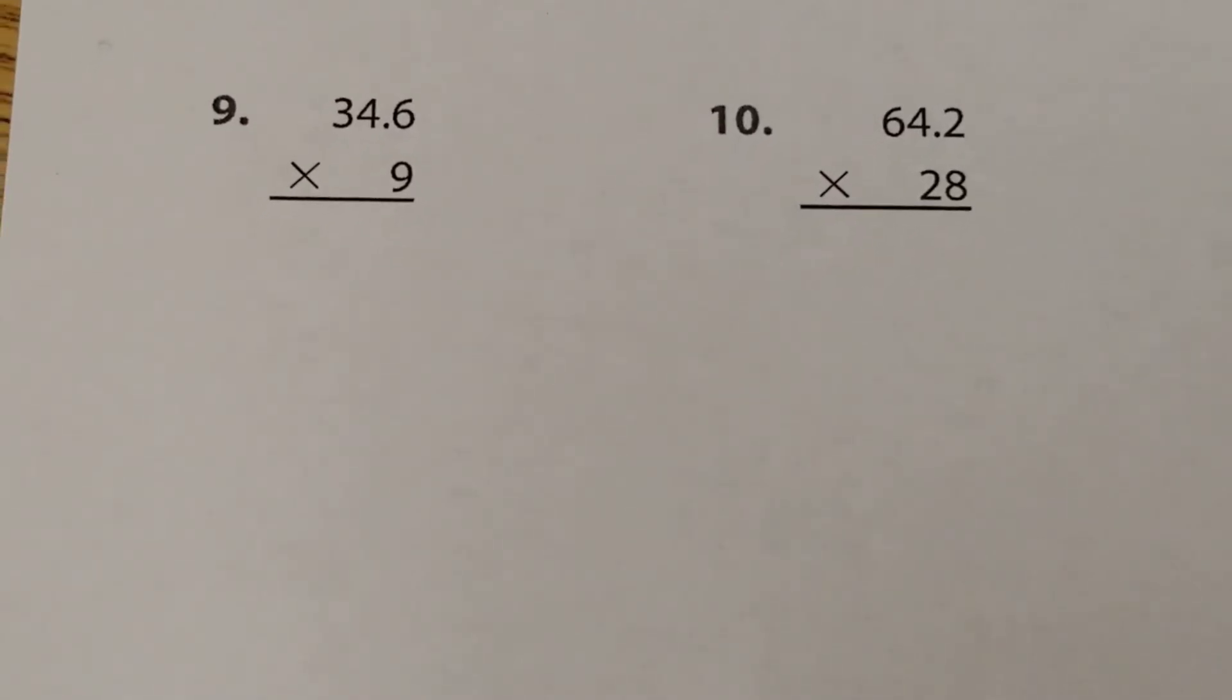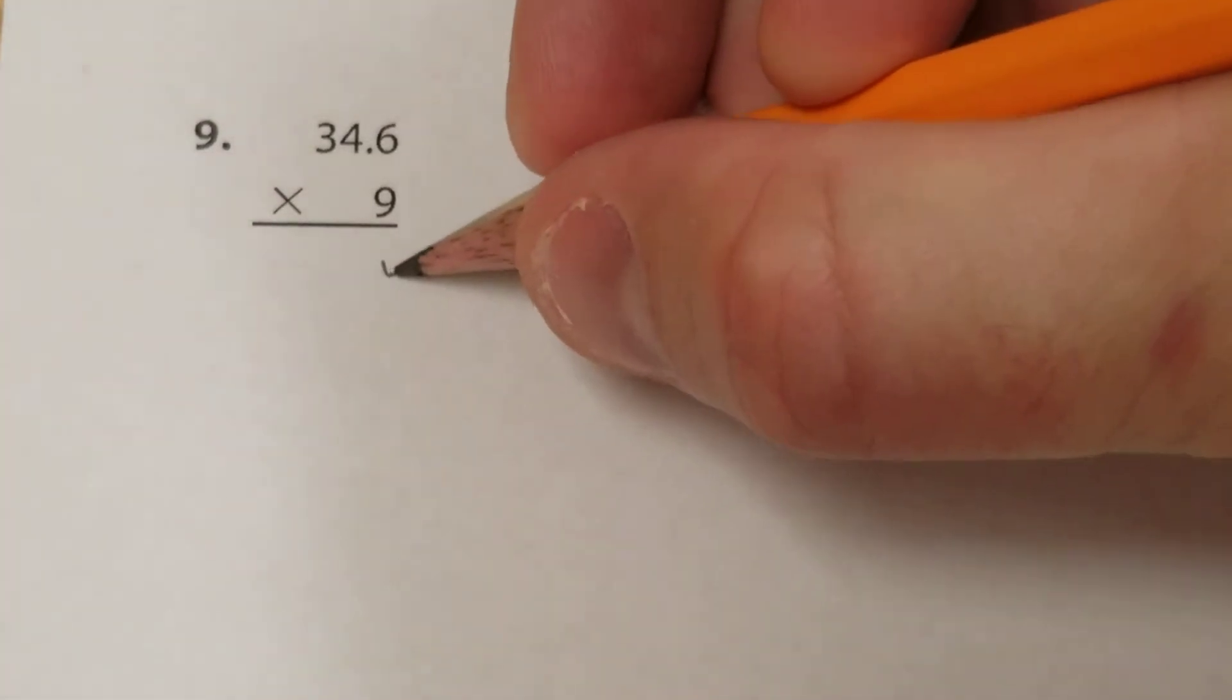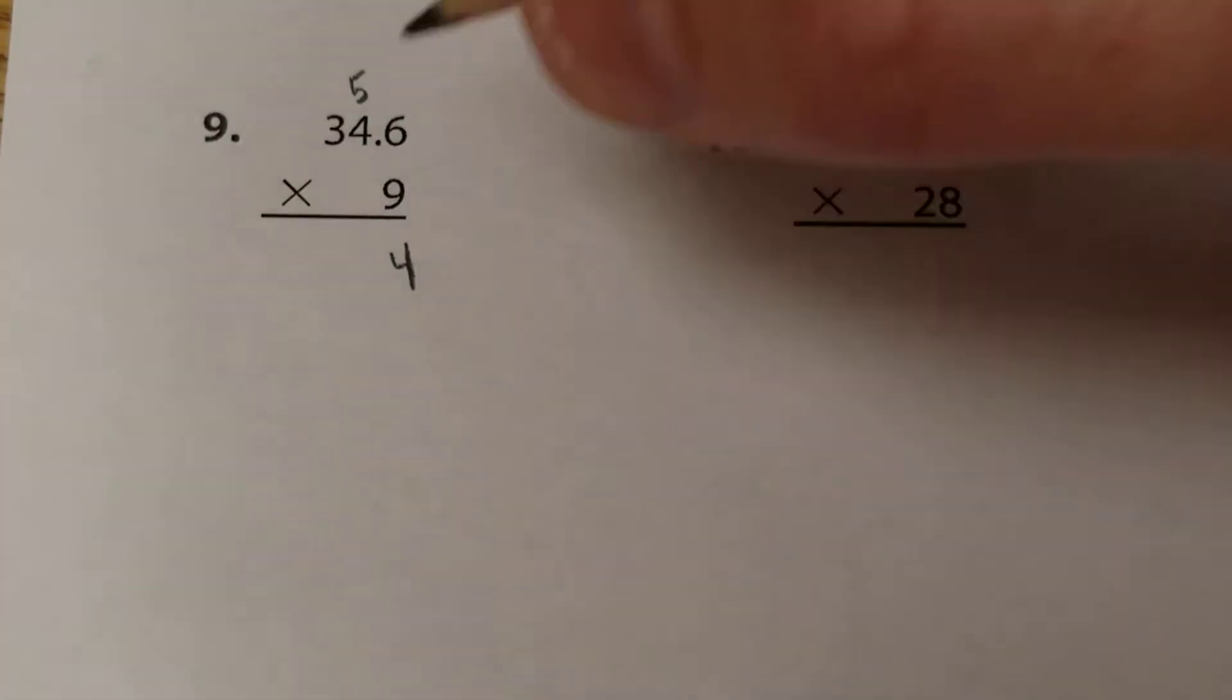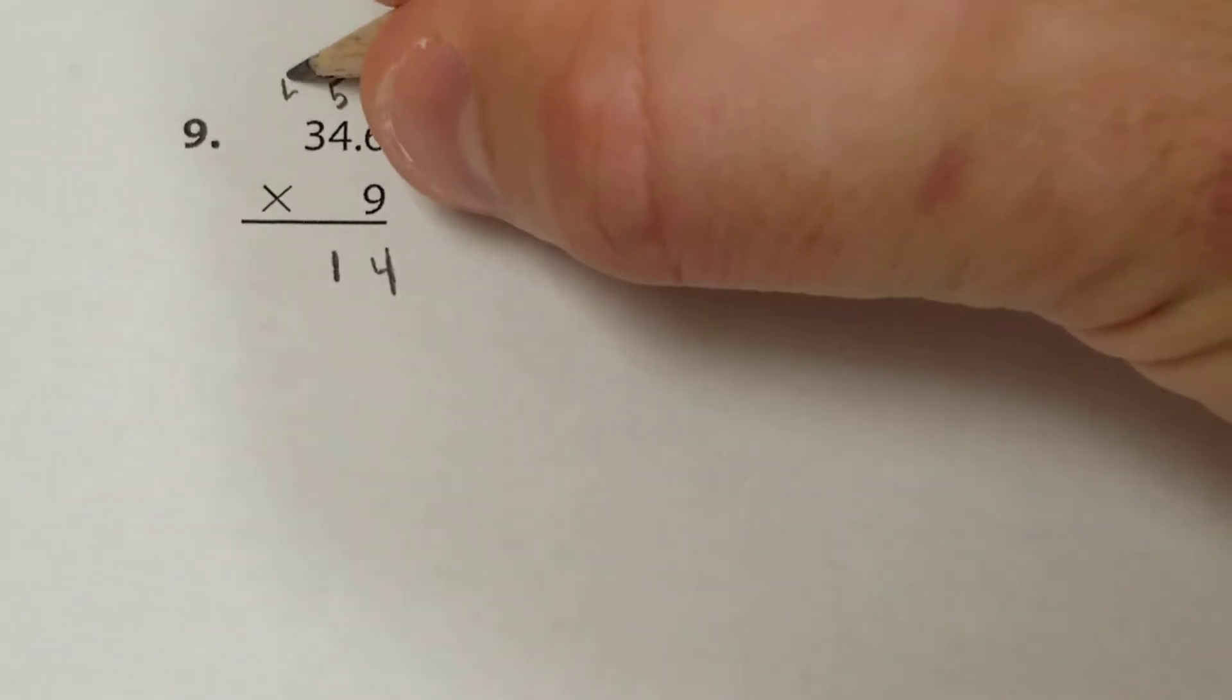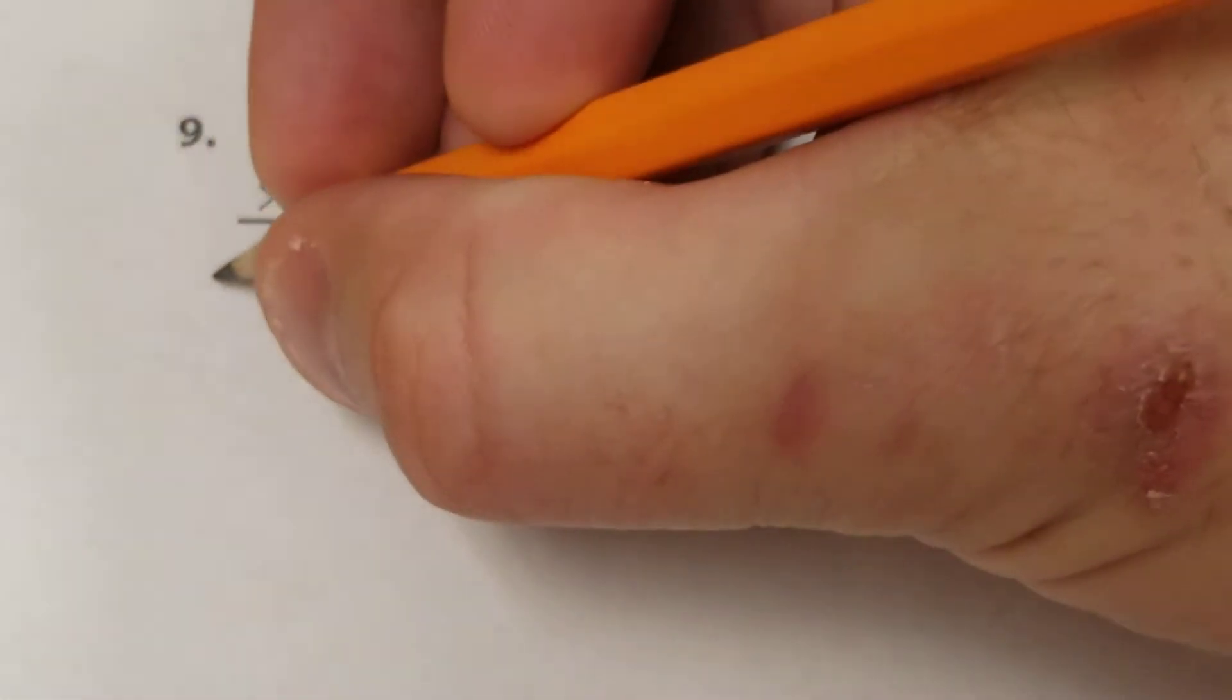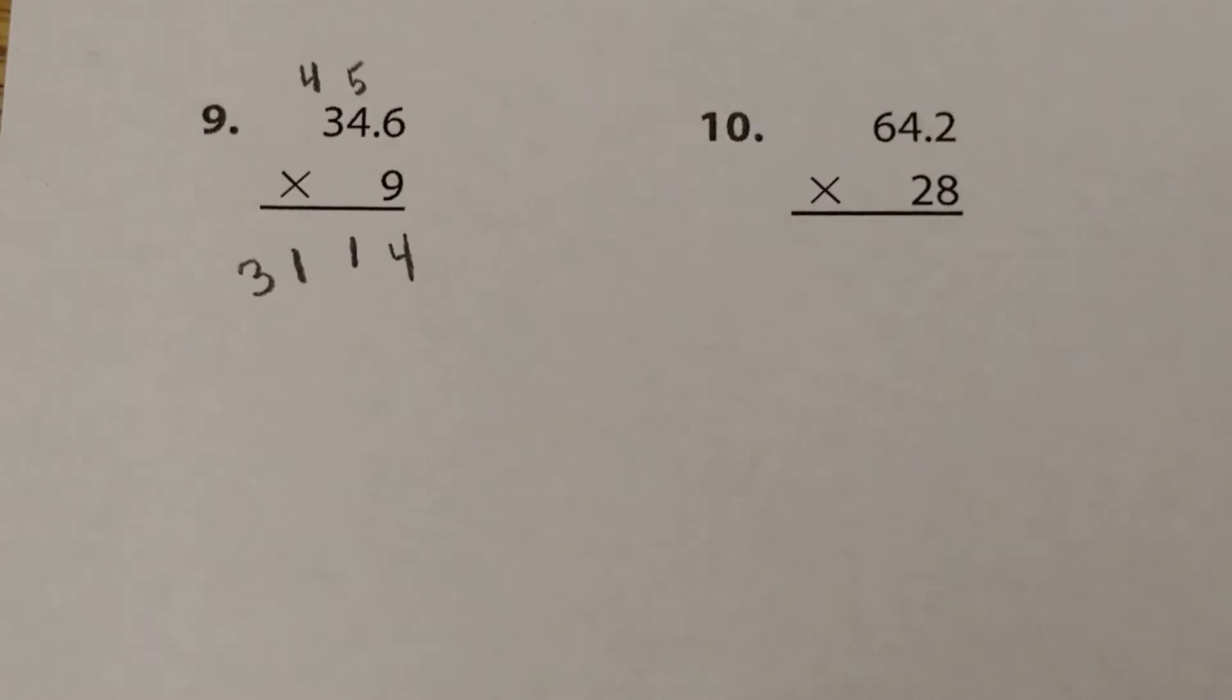So first one we have 34.6 times 9. We just multiply as normal. 9 times 6 is 54, regroup my 5. 9 times 4 is 36, 36 plus 5 is 41, regroup my 4. 9 times 3 is 27, 27 plus 4 is 31. Now you don't have to do it this way, you can do it however you want. How I normally do it is I circle all of the numbers after the decimals.